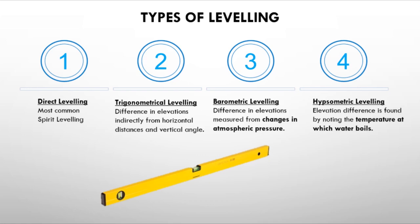Barometric leveling uses atmospheric pressure to determine elevation differences. Hypsometric leveling uses the boiling temperature of water, which differs with elevation, to find elevation. Trigonometric, barometric, and hypsometric are all indirect methods of leveling.